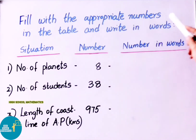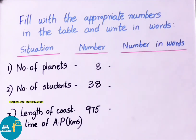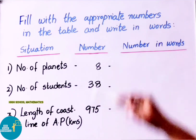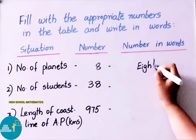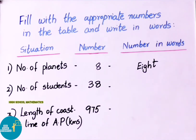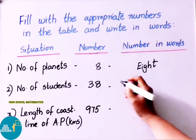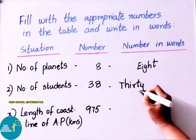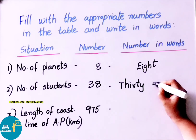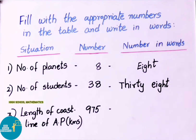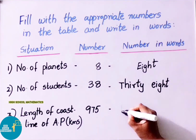Now, fill in the table with appropriate numbers and write in words. Number of planets: there are 8 planets, so the word form is 'Eight.' Number of students in class: for example, 38 — write the first letter as capital and the rest as small letters. Number of coastline of AP in kilometers: 975 kilometers — write the word form accordingly.